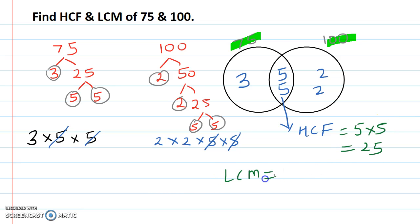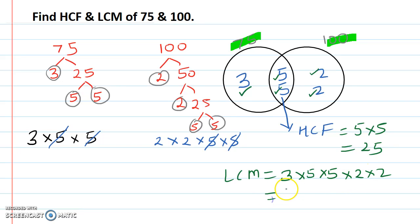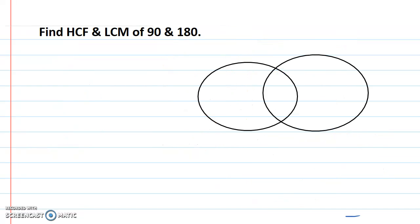And LCM will be the multiplication of all the numbers: 3, two 5s, and two 2s. So 3 times 5 is 15, times 5 is 75, times 2 is 150, times 2 is 300. So LCM is 300.